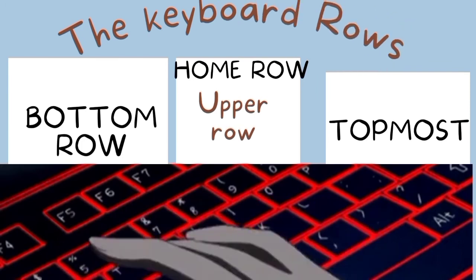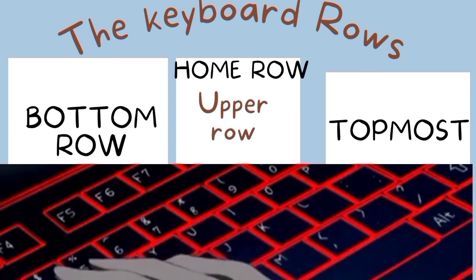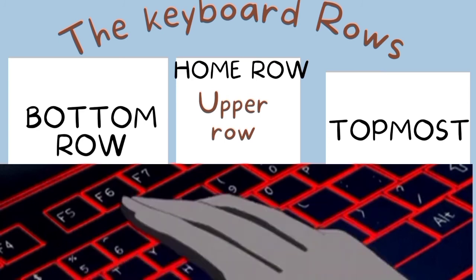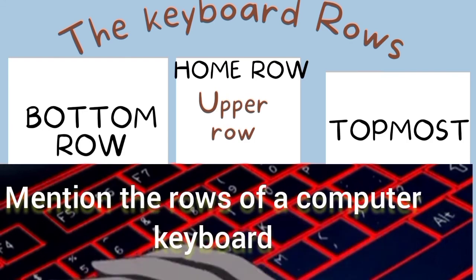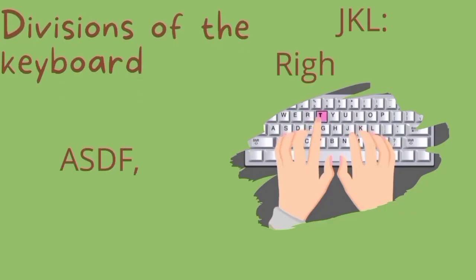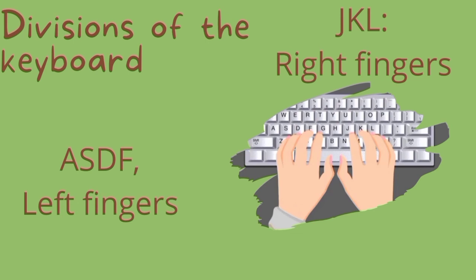Let's look at the keyboard rows. The bottom row consists of keys like Z, X, C, V, B, N, and the rest. Now let's look at the division of the computer keyboard. It is basically divided into two parts: the left fingers part and the right fingers part. The left fingers aspect consists of keys like A, S, D, F, and the right side is J, K, L, and the rest.